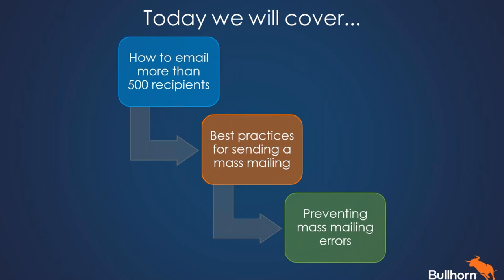Now I'm going to start with how to email more than 500 recipients. While we cannot send a mass mailing to more than 500 people at a time — and that's to avoid being marked as spam — we can break up a larger list into groups of 500. This can be accomplished by using tear sheets. A tear sheet containing 2,000 names could easily be divided up into distribution lists of 500.